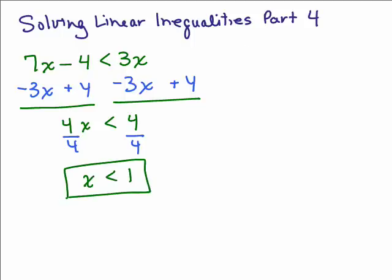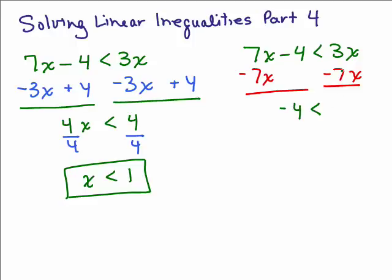Let's do it one more time. 7x minus 4 less than 3x. What if, since you only have a constant in one place on the left side, you decided to subtract 7x from both sides so that the variables were on the right-hand side? You would have negative 4 is less than 3 minus 7, which is negative 4x.